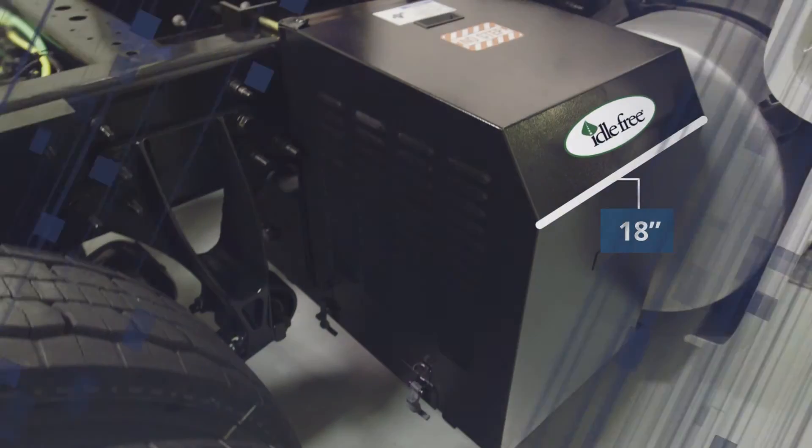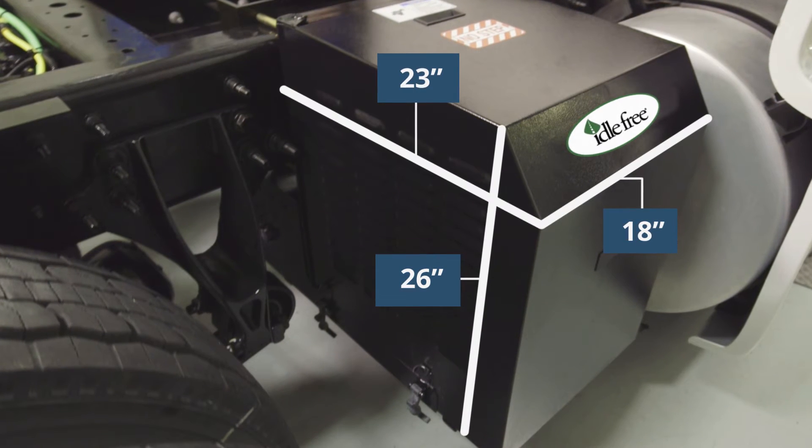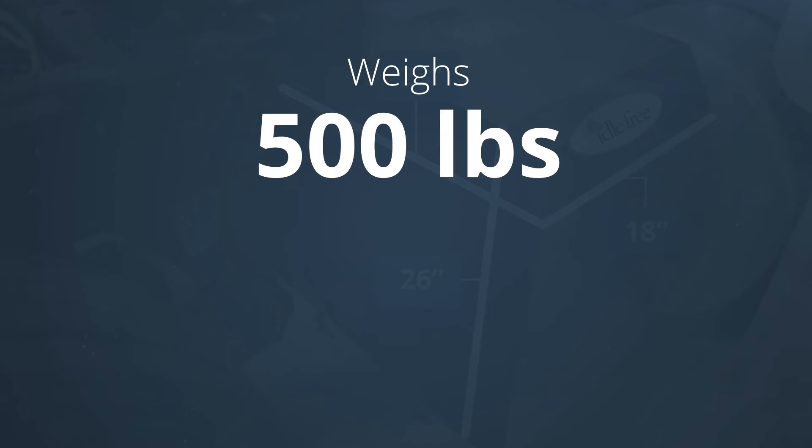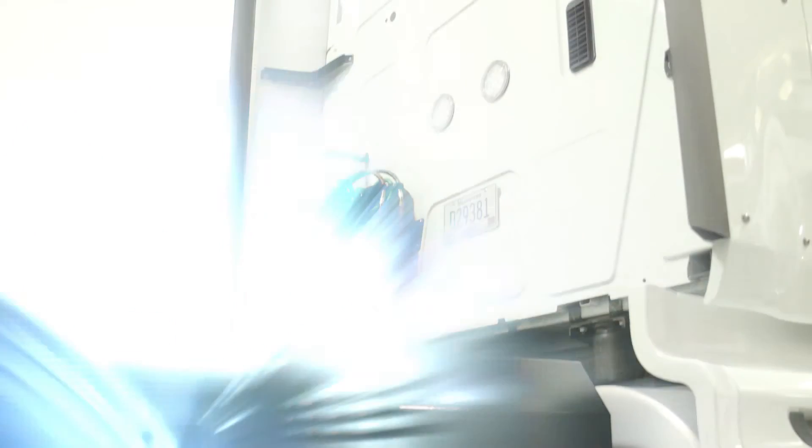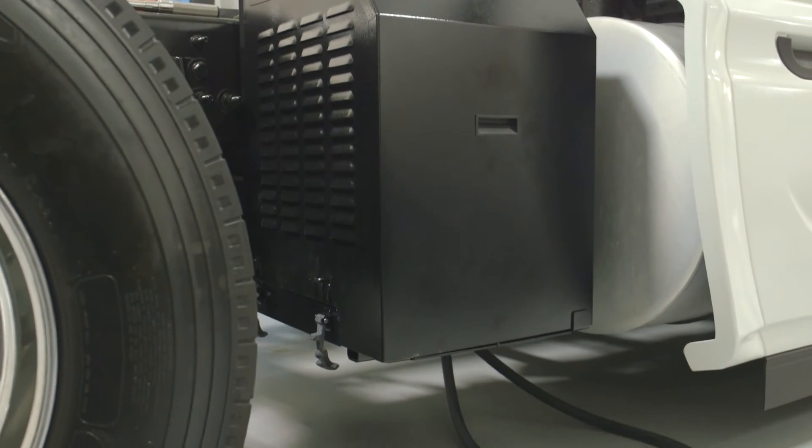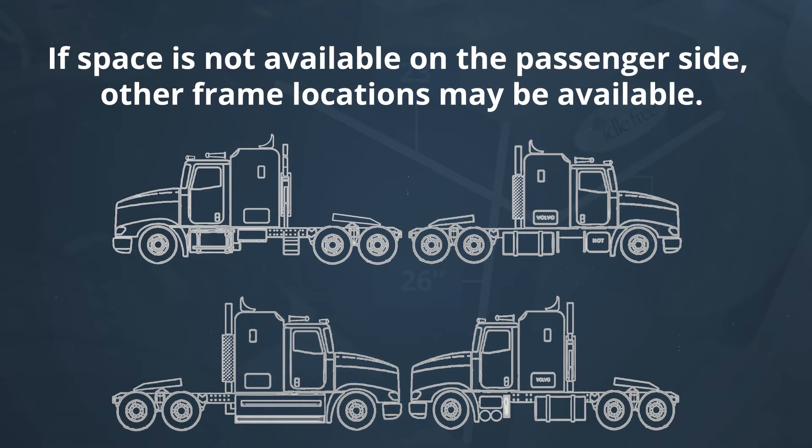The frame rail unit is an 18 by 23 by 26 inch box that will be mounted on the frame rail. It weighs approximately 500 pounds and requires 24 inches of clearance on the frame rail. The typical location is the passenger side of the truck behind the fuel tank, in front of the drive wheels. If space is not available on the passenger side, other frame locations may be available.